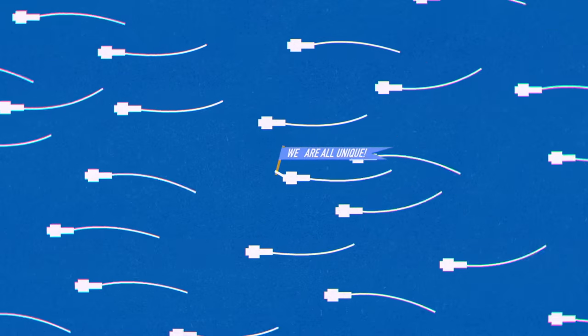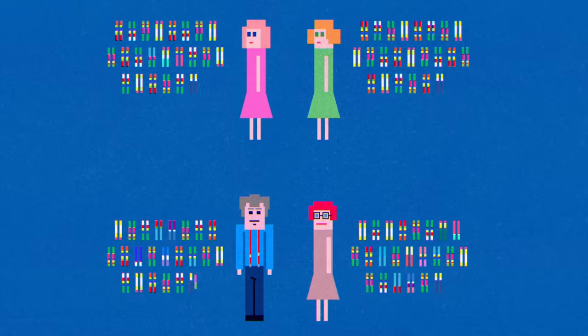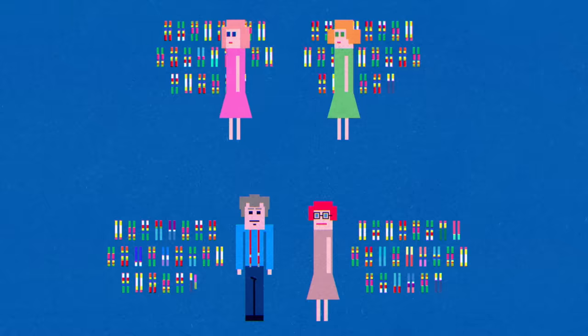Recombination occurs uniquely in each sex cell, making two sisters' chromosomes different not only from their parents, but from each other's.